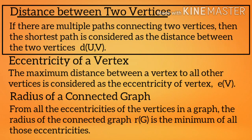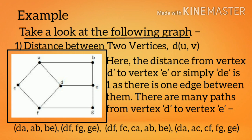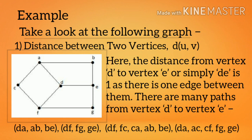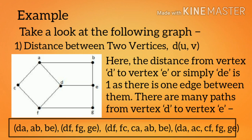Distance between two vertices: if there are multiple paths connecting two vertices, the shortest path is considered as the distance D(U,V) between them. For example, the distance from vertex D to vertex E is 1 as there is one edge between them. There are many paths from D to E, such as D-A-B-E, D-F-G-E, D-F-C-A-B-E, and D-A-C-F-G-E.